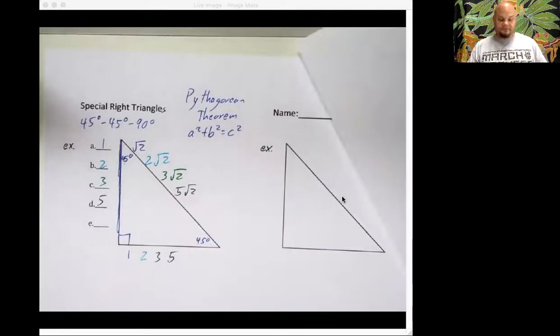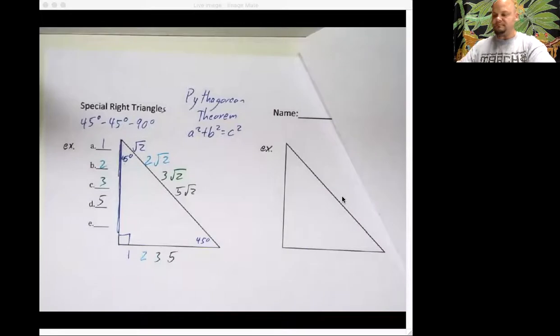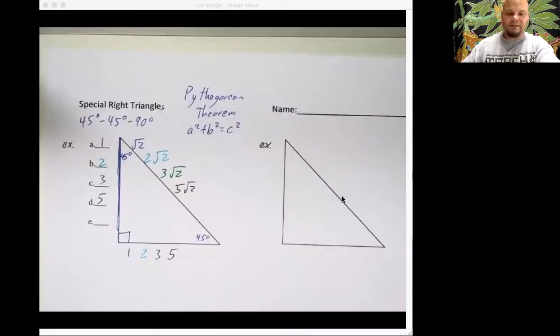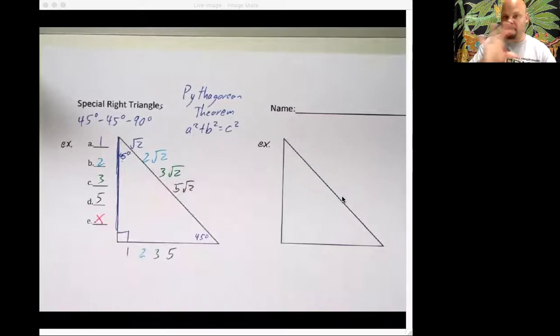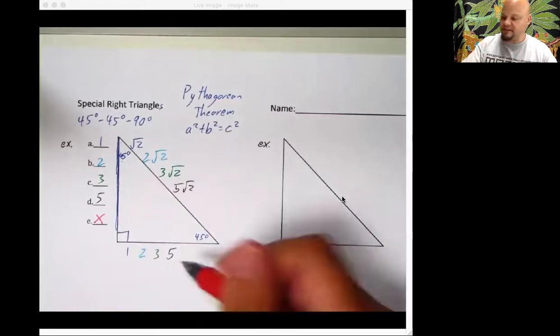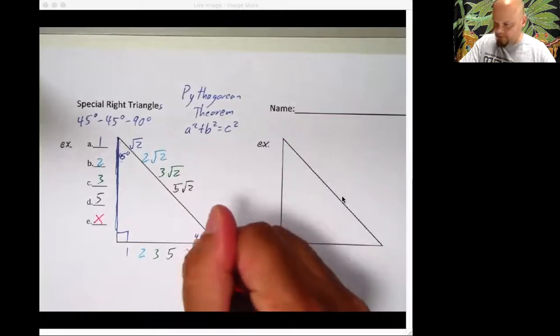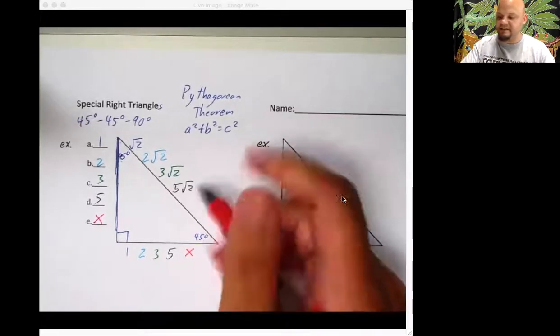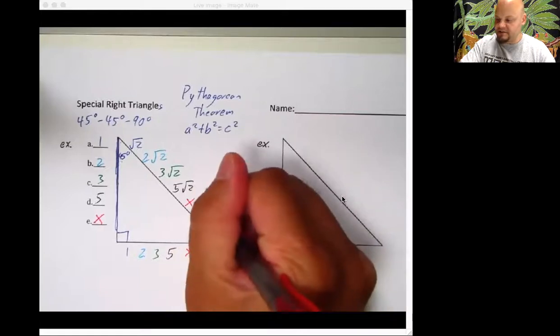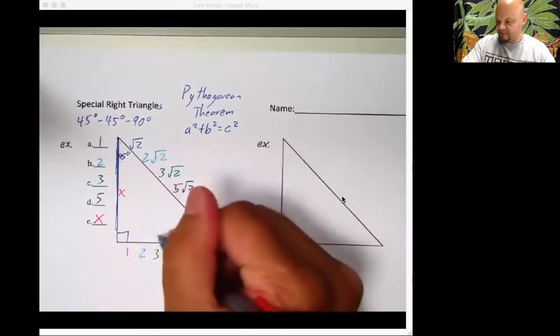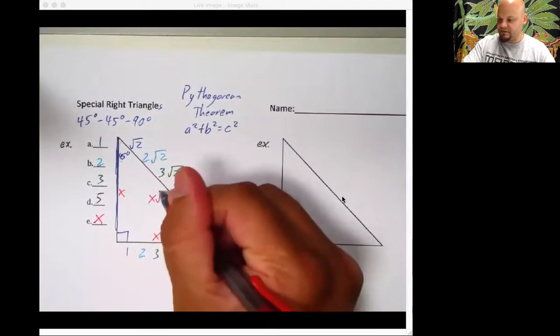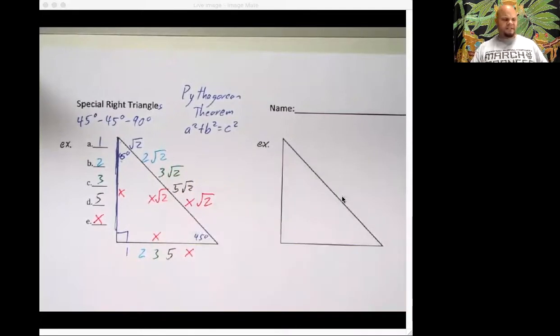You guys got to believe me. I'm telling you the truth. So generally, so that we can do this all the time whenever we see a 45, 45, 90 degree triangle, what is our formula here? Well, if this side is X, any number, then this side over here is that same number, X. But this side is that number times the square root of two. X, X, X root two.